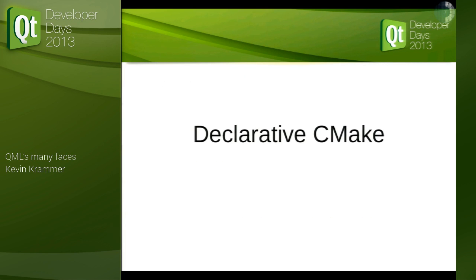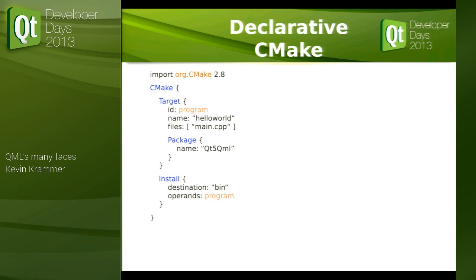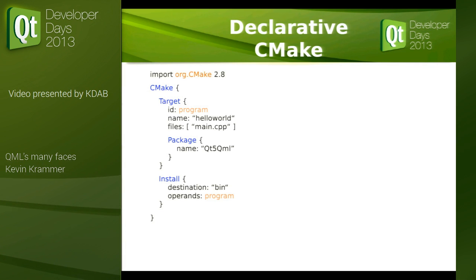Those are all examples for UI. What if you do something that's non-UI, like declarative CMake? This is a prototype that my friend and colleague Stephen Kelly wrote. The idea is you use QML as a declarative language to describe a build system. We have again the import, again elements, elements that refer to each other and bind properties.